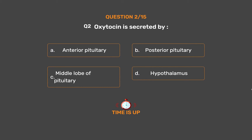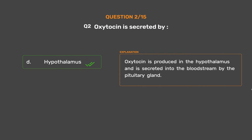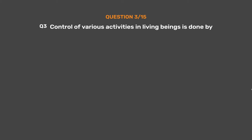The correct answer is Option D, Hypothalamus. Oxytocin is produced in the hypothalamus and is secreted into the bloodstream by the pituitary gland.